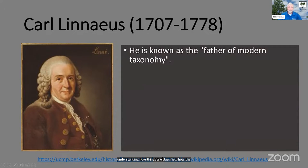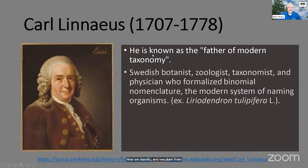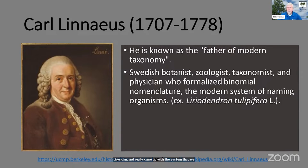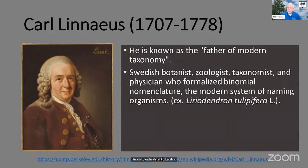Carl is known as the father of modern taxonomy. Taxonomy is the system of classification — how we classify one plant from another, one animal from another. He was a Swedish botanist, zoologist, taxonomist, and physician, and really came up with the system we still use today. An example I'm showing you here is Liriodendron tulipifera — that is the scientific name for the yellow poplar. The genus is Liriodendron, and tulipifera is the species name.